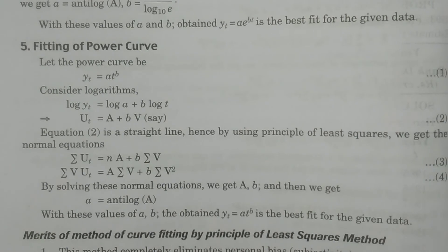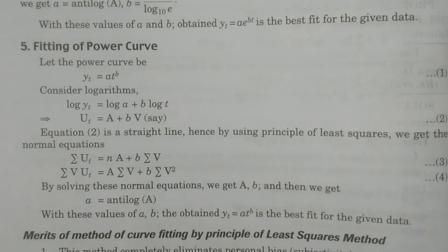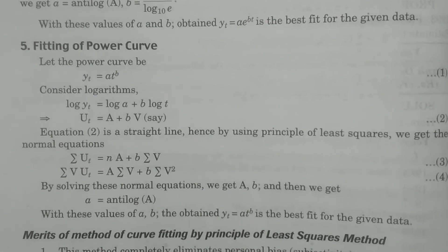So we use the principle of least squares to obtain the best fit of the given data by estimating the relevant parameters. This is the principle of least squares method, used for identifying and obtaining long-term fluctuations in the time series data. Thank you very much.